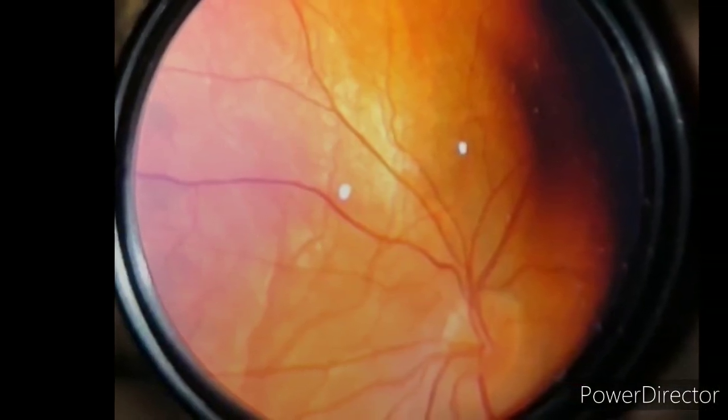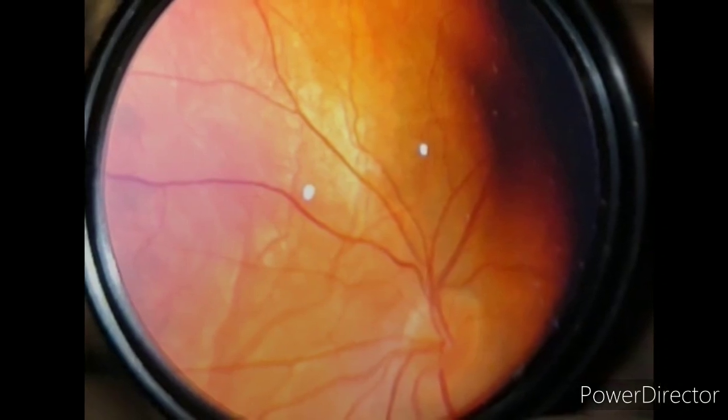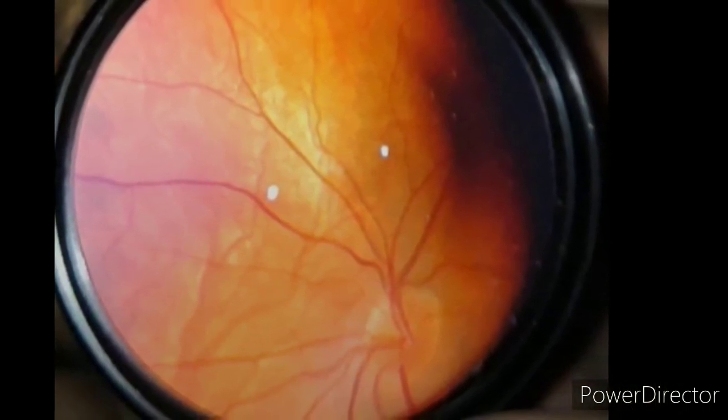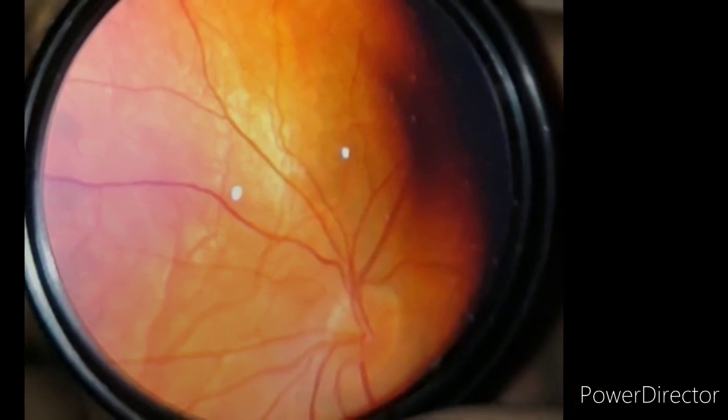I am Dr. Sharjeel and today I would like to tell you how to determine cup-disc ratio because a lot of students find it confusing. In the first picture there is absent cup. You can see all the healthy neuroretinal rim covering the disc area, so that's absent cup.